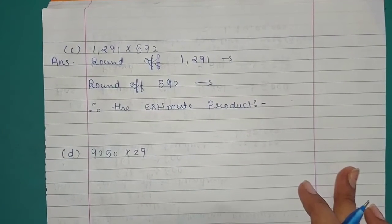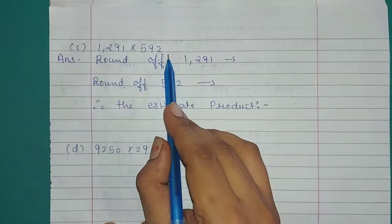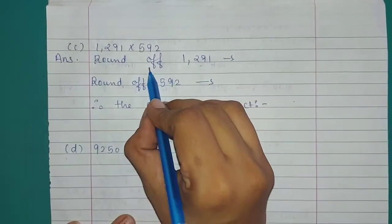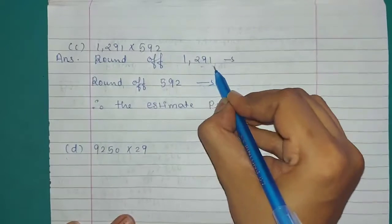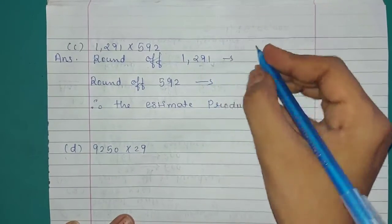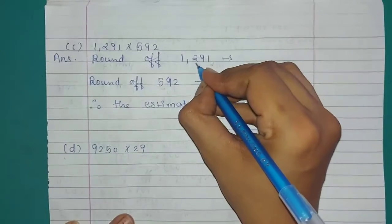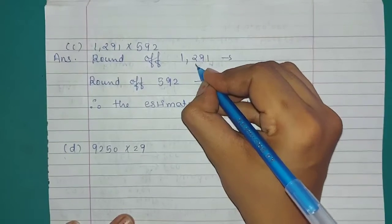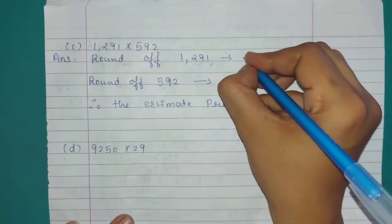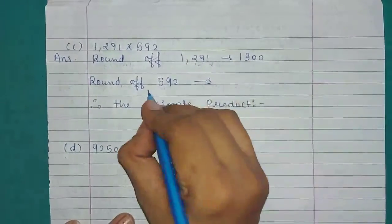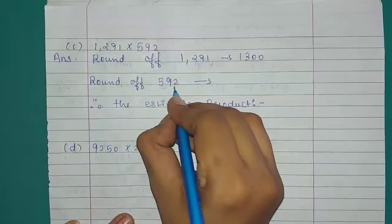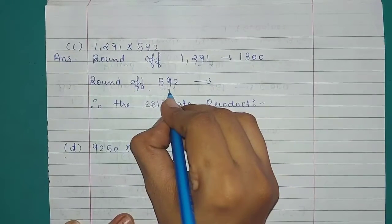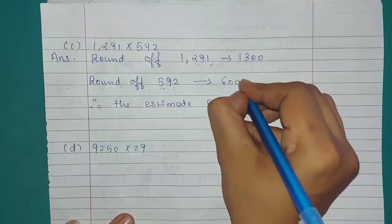Example C: 1,291 multiplied by 592. Here we will round off the numbers to hundreds. Rounding off 1,291: the hundreds place value is 2, and the digit next to 2 is 9, which is greater than 5, so we add 1. The answer is 1,300. Rounding off 592: the hundreds place value is 5, and the digit next to 5 is 9, which is greater than 5, so we add 1. The answer is 600.